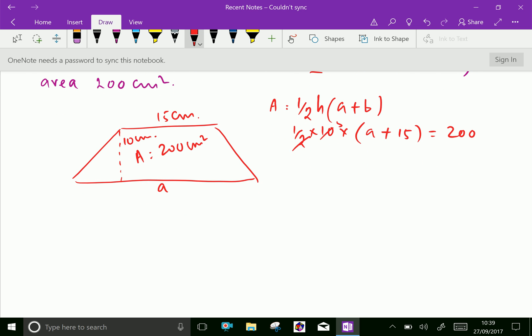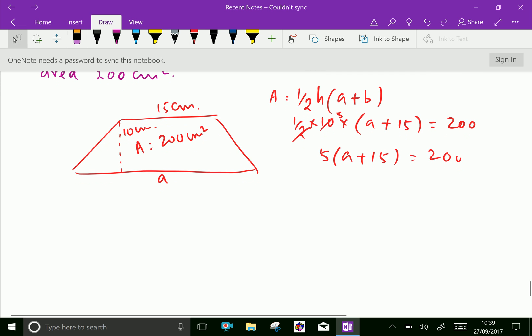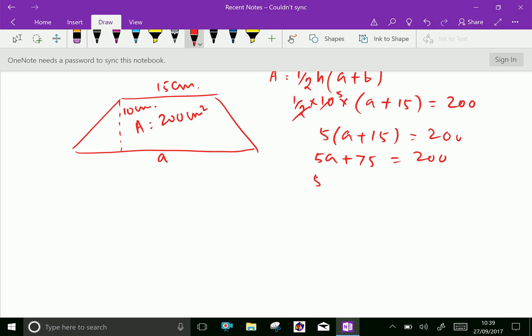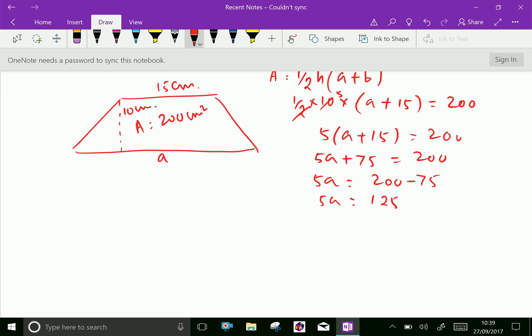5 into A plus 15 equals 200. 5A plus 75 equals 200. Then, 5A equals 200 minus 75. 5A equals 125. A equals 125 over 5 equals 25 centimeters.